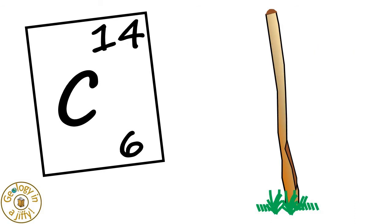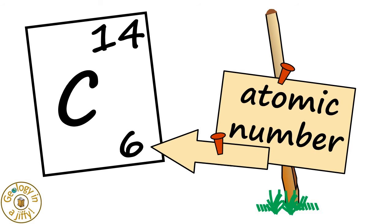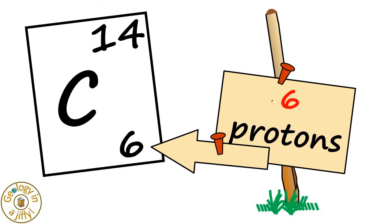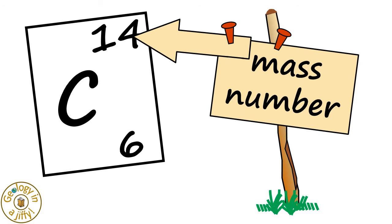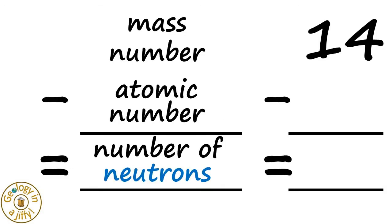Carbon-14 is a different version of carbon. The atomic number of carbon-14 is also six, which means it also has six protons in its nucleus, and therefore, it also has six electrons orbiting its nucleus too. The mass number of carbon-14 is 14, so using this mass number 14, we then subtract the atomic number six to calculate that carbon-14 has eight neutrons in its nucleus.